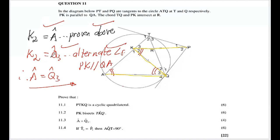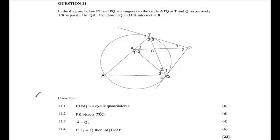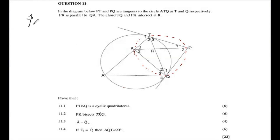For 11.4: given that T2 equals P1, prove that angle AQT is 90 degrees. From 11.1, we have proven that PTKQ is a cyclic quad — very crucial. We are given T2 equals P1, so let's mark that as given and use what we've established.